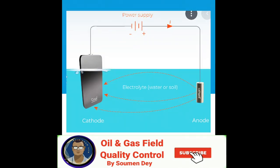What is an electrolyte? An electrolyte is the liquid or corrosive medium that conducts electricity. It contains ions, which are particles of matter that carry a positive or negative charge.